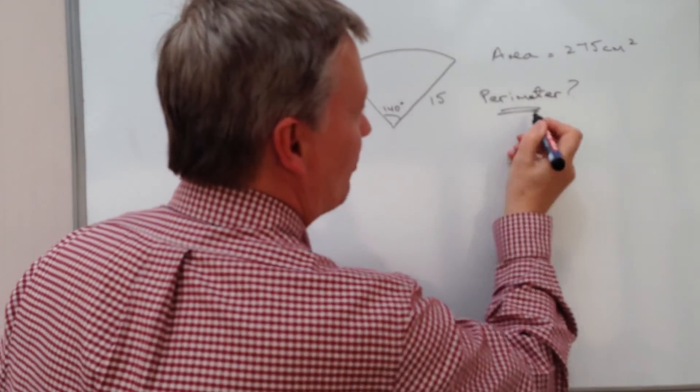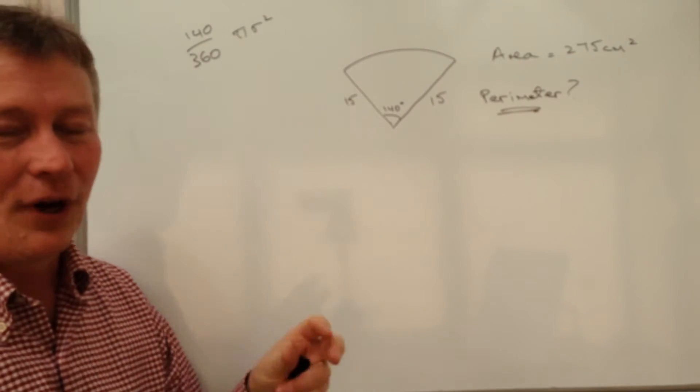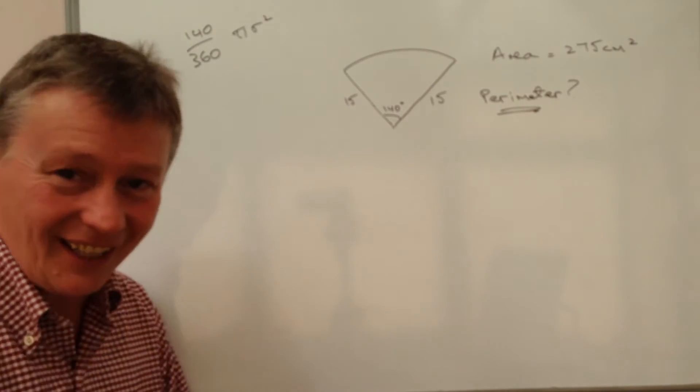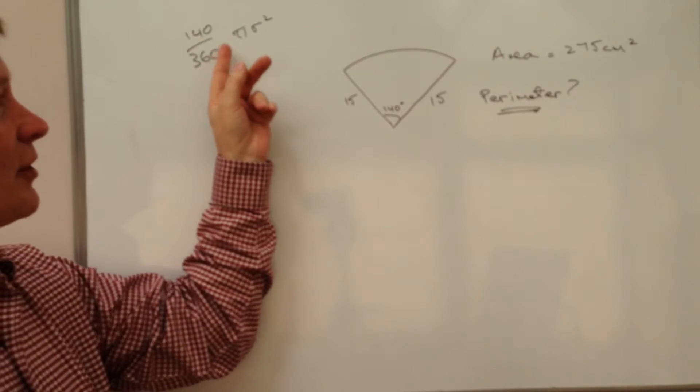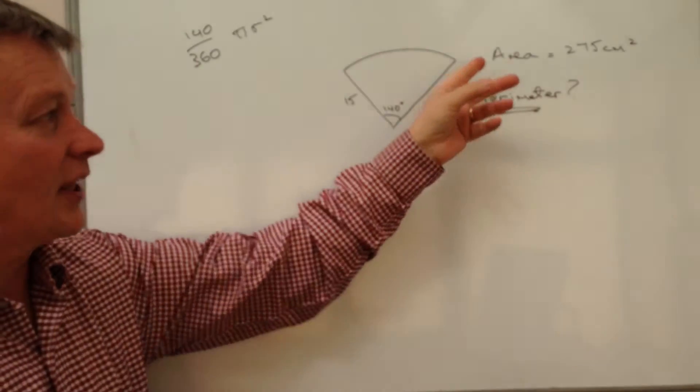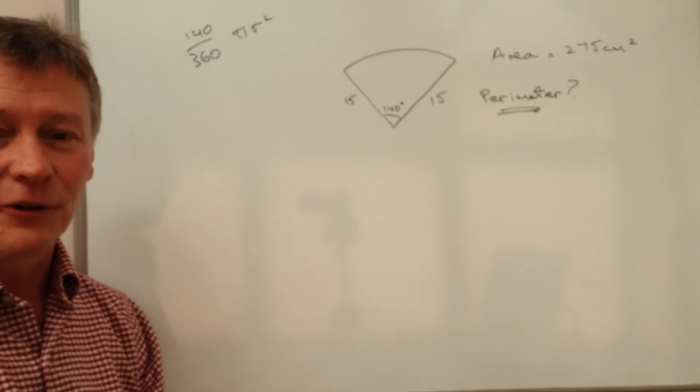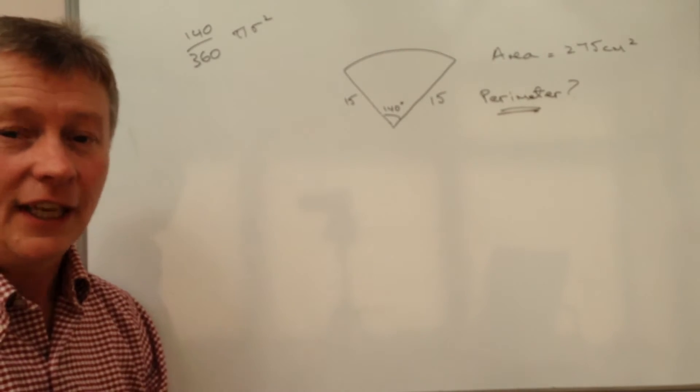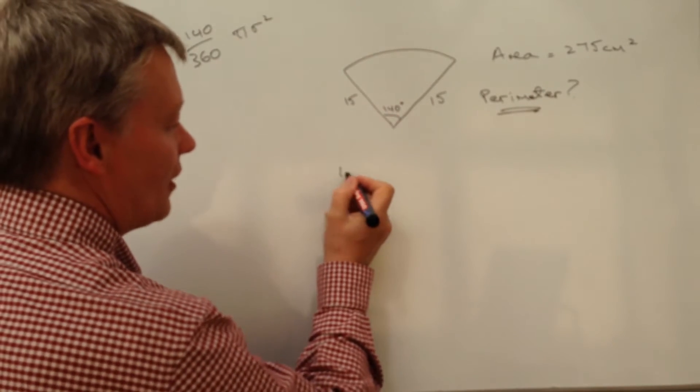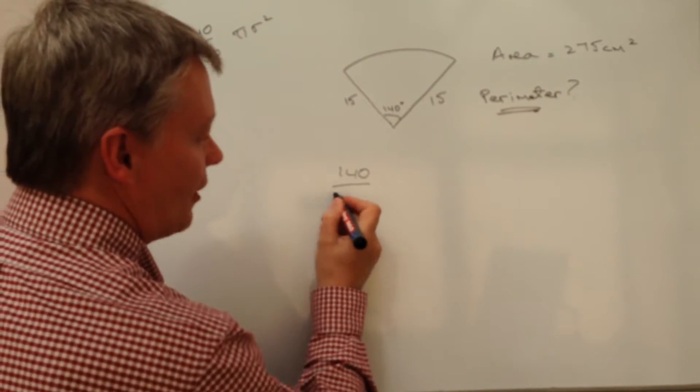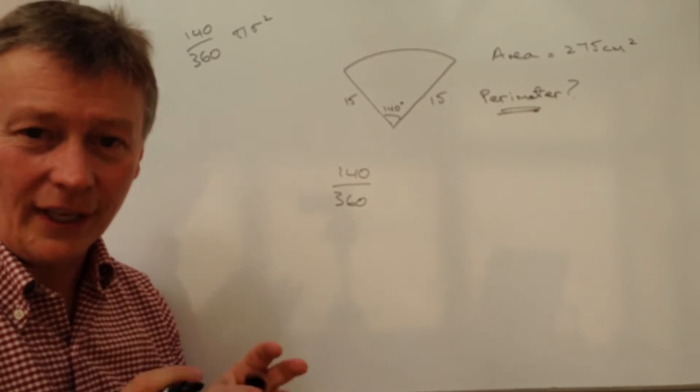And this particular question also asks you to work out the perimeter. So the perimeter - I hope I spelled that right. The principle is exactly the same. At the moment, we use a fraction of the area of the circle in order to calculate the area. So we're going to use a fraction of the perimeter calculation for a circle in order to calculate the perimeter. What I mean by that is we still got 140 out of 360 degrees. So that's the fraction that we're actually interested in.